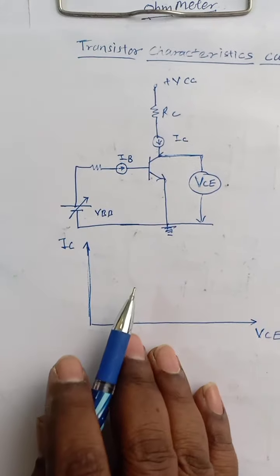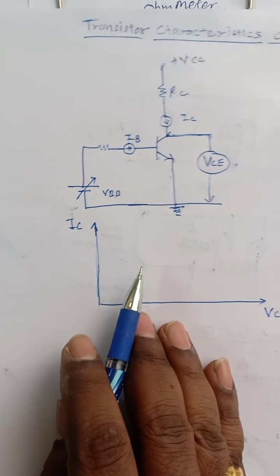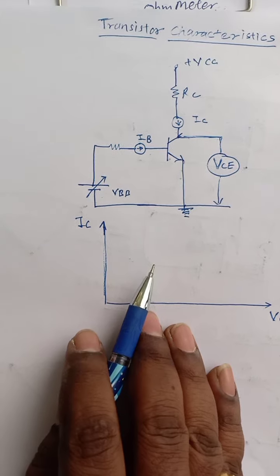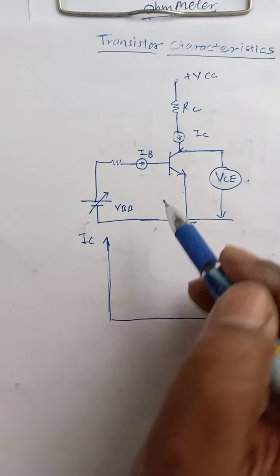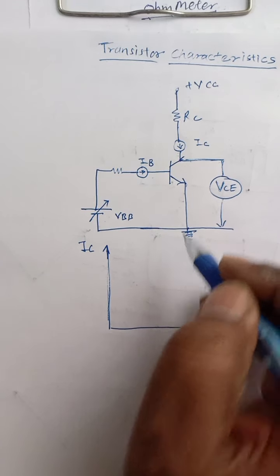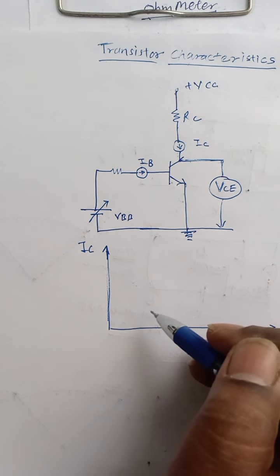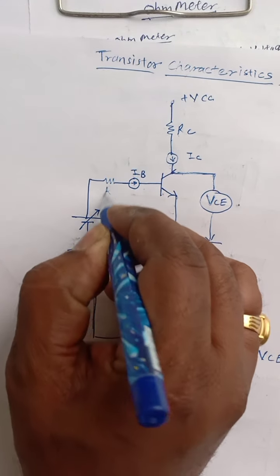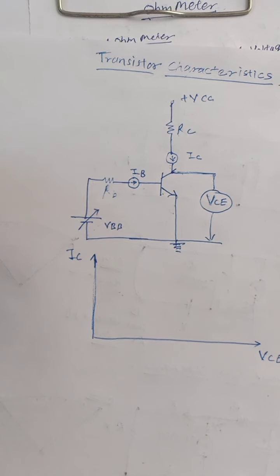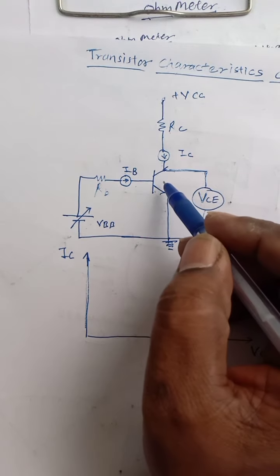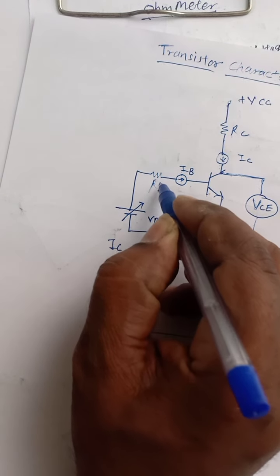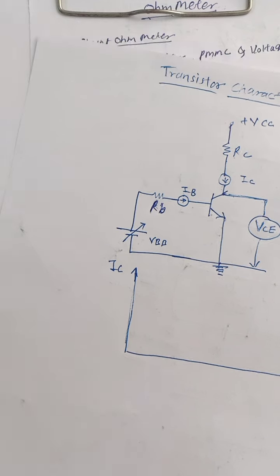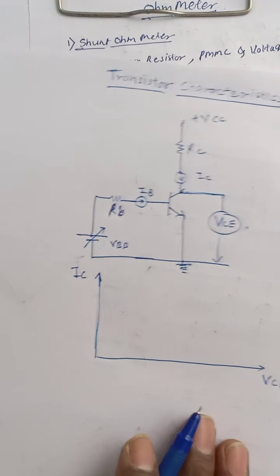In transistor characteristic curves, we are going to observe the behavior between the current and voltage of the transistor. For that purpose you have to arrange the circuit. This is the NPN transistor which is connected in a common emitter configuration. Here RC and RB are connected in the circuit. RC provides load to the transistor and RB limits the current for the transistor.